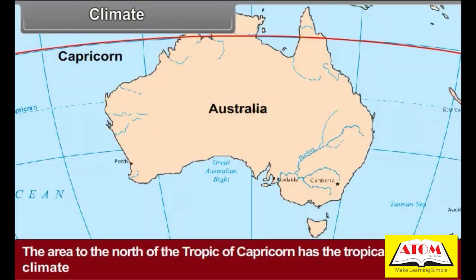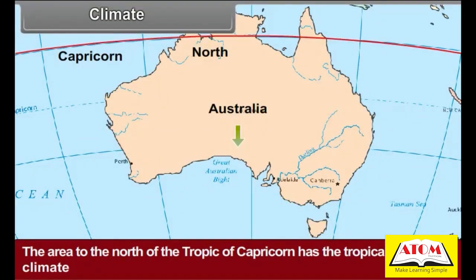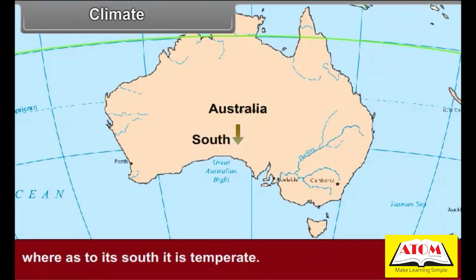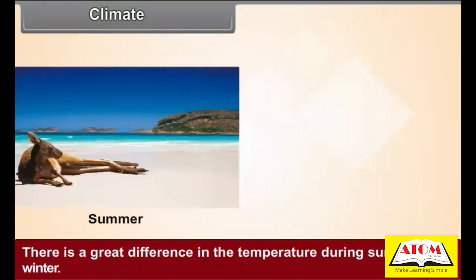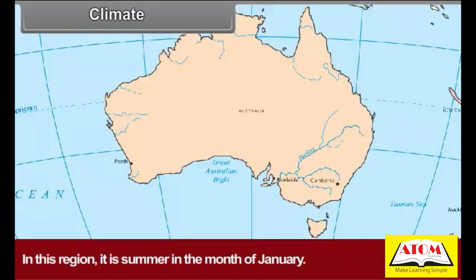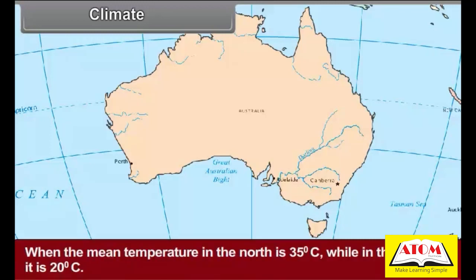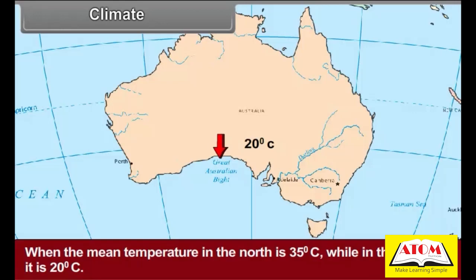On the whole, the climate of the continent can be described as hot and dry. The area to the north of the Tropic of Capricorn has a tropical climate, whereas to the south it is temperate. There is a great difference in temperatures during summer and winter. It is summer in the month of January.